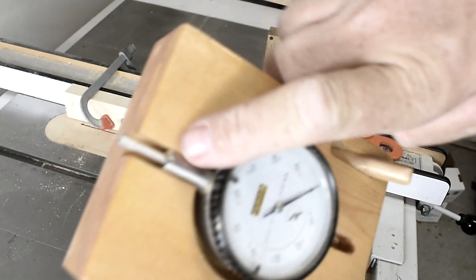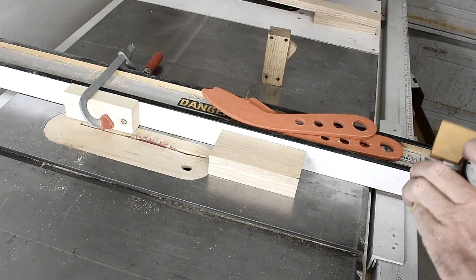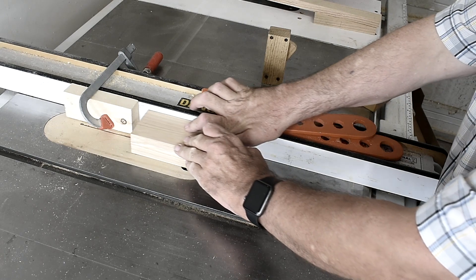Now I'm going to make this cut right here. So I've set the blade height and put a stop block so I don't cut all the way through the block.